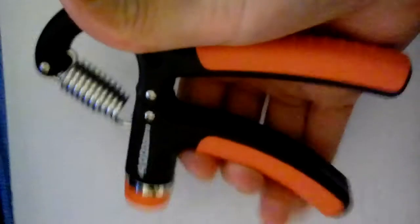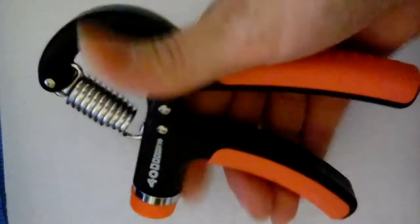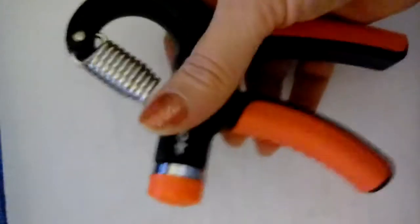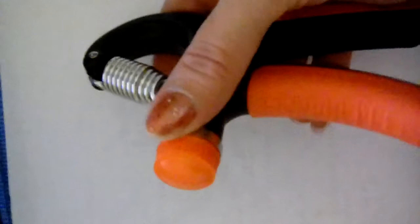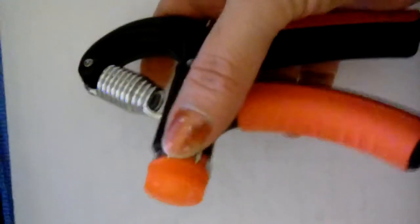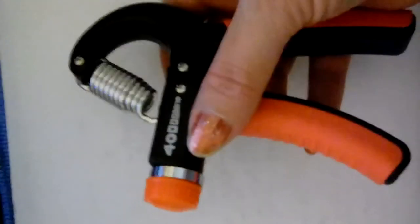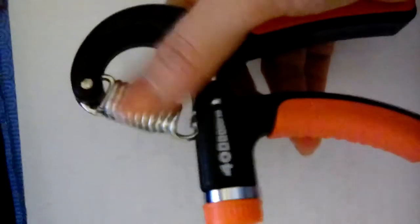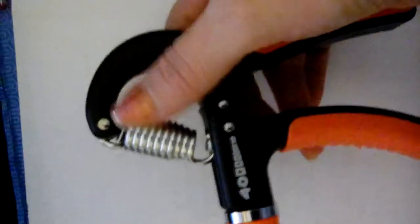Hi, today I'm going to show you the hand grip to help strengthen your hands. It has the adjuster here on the end. You can adjust it up to 22 to 88 pounds. Here is the spring, it's stainless steel.